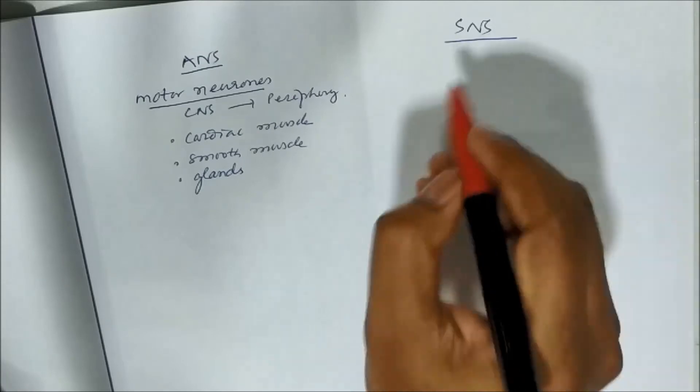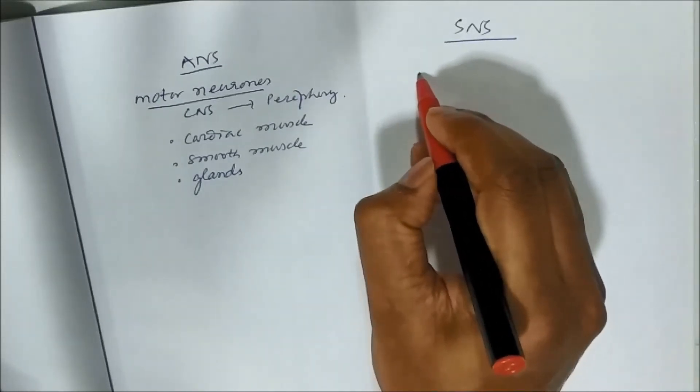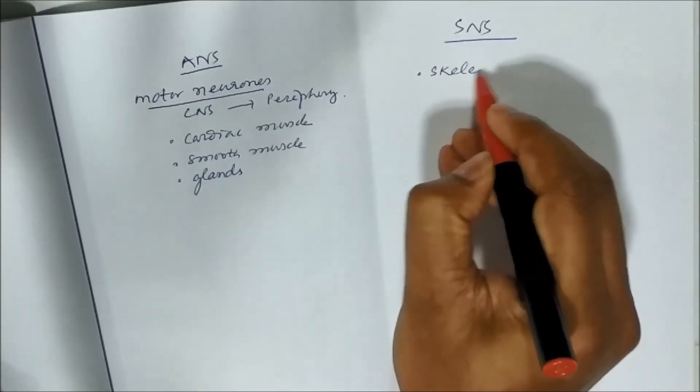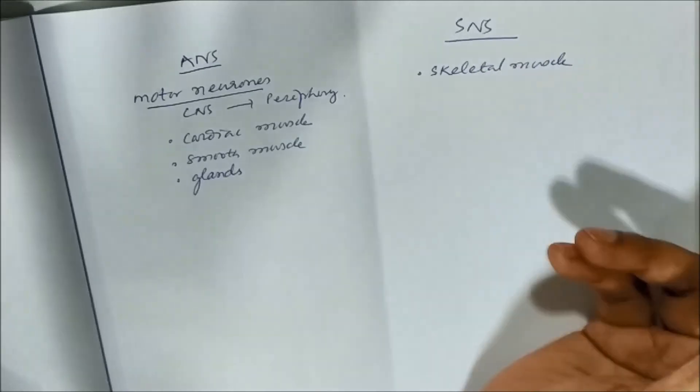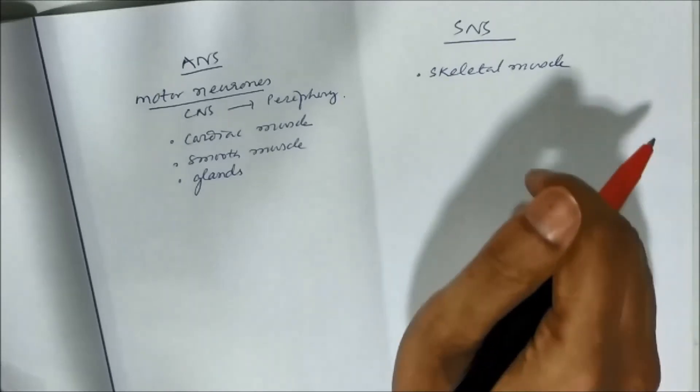Whereas motor neurons innervate in SNS to skeletal muscles. So the examples we have given, skeletal muscle contraction and relaxation, that is an example of somatic muscle.